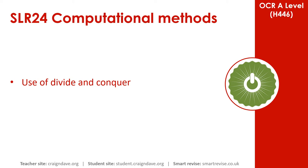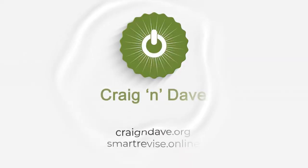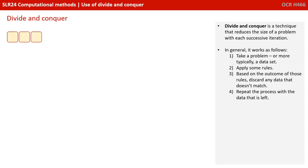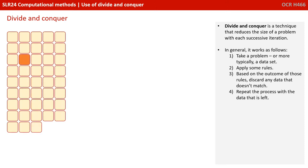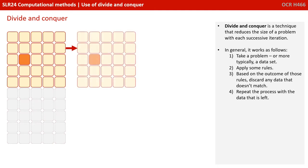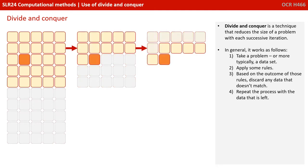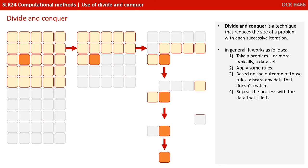In this video, we discuss the use of divide and conquer. Divide and conquer is a technique that reduces the size of a problem with each successive iteration. In general, it works as follows: take a problem, or more typically a data set, apply some rules, and based on the outcome of those rules, discard any data that doesn't match. Repeat the process with the data that's left.